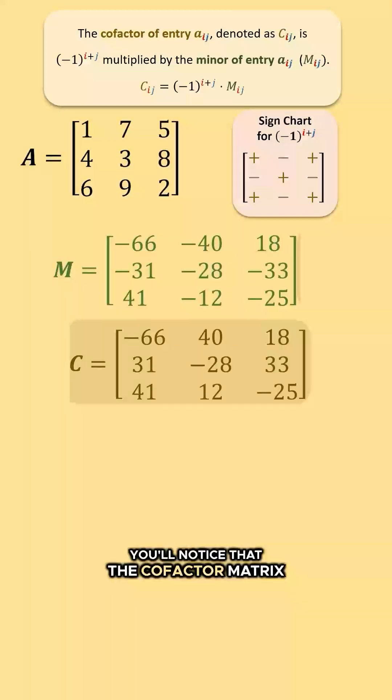You'll notice that the cofactor matrix capital C matches the minor matrix capital M, except that entries have opposite signs where the row number plus column number is odd.